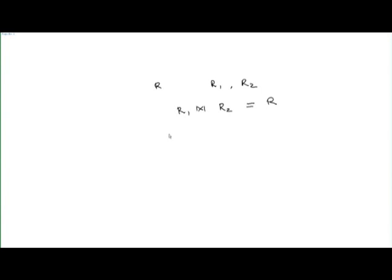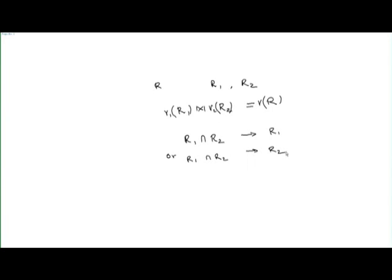Take the intersection of R1 and R2 — those are the common attributes. There is a sufficient condition on the common attributes which ensures that the decomposition is lossless. That sufficient condition is that the common attributes either determine R1 or they functionally determine R2. One of these two should be satisfied. If it is, then the decomposition of R into R1 and R2 will be lossless.